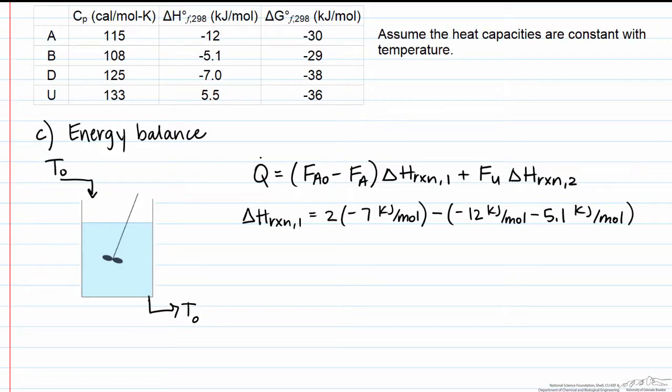The enthalpy change due to reaction 1 is equal to the heats of formation of the products, in this case our product is D, times its stoichiometric coefficient, so the heat of formation for D is negative 7 kilojoules per mole, multiply that by 2, minus the reactants, which have stoichiometric coefficients of 1. The heat of formation of component A is negative 12, and the heat of formation of component B is negative 5.1 kilojoules per mole. The enthalpy change due to reaction 1 is equal to 3.1 kilojoules per mole of A that's consumed from this reaction.